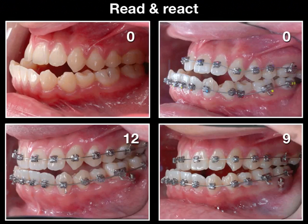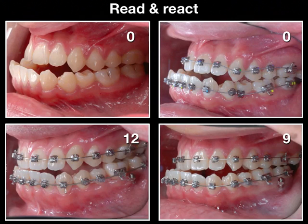So let's go step by step. From day zero, we put the braces. By nine months, we were able to line up the teeth, and we placed a mini-screw right here.